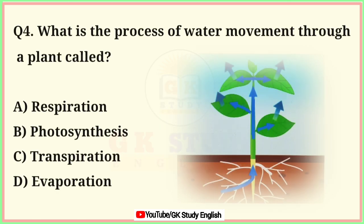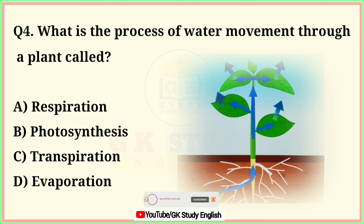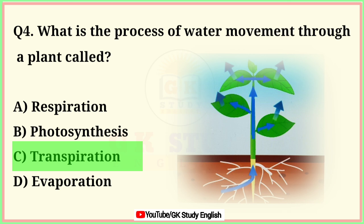Question number 4. What is the process of water movement through a plant called? A. Respiration. B. Photosynthesis. C. Transpiration. D. Evaporation. Correct answer is option C. Transpiration.